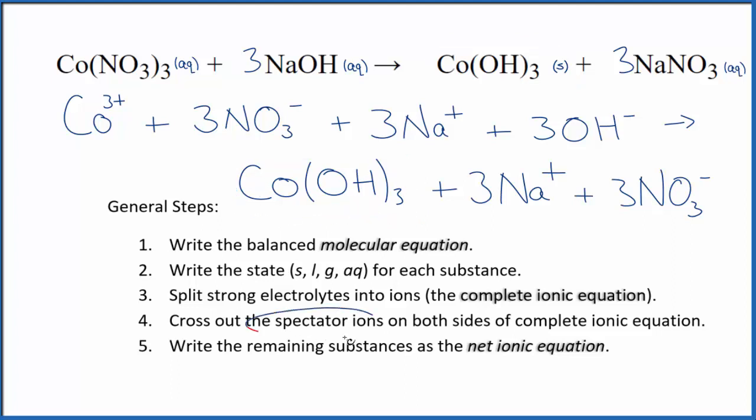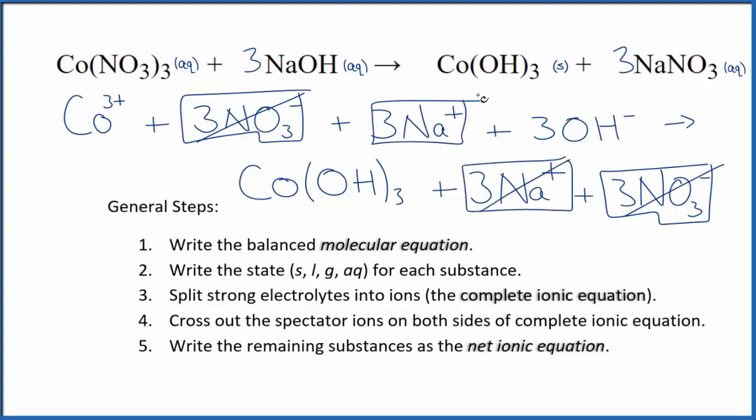Now we can cross out spectator ions - they're on both sides of the complete ionic equation. In the reactants, I see we have three nitrate ions. We also have three nitrate ions in the products. Spectator ions - we cross those out. Three sodium ions in the reactants and in the products. Spectator ions, they're gone.